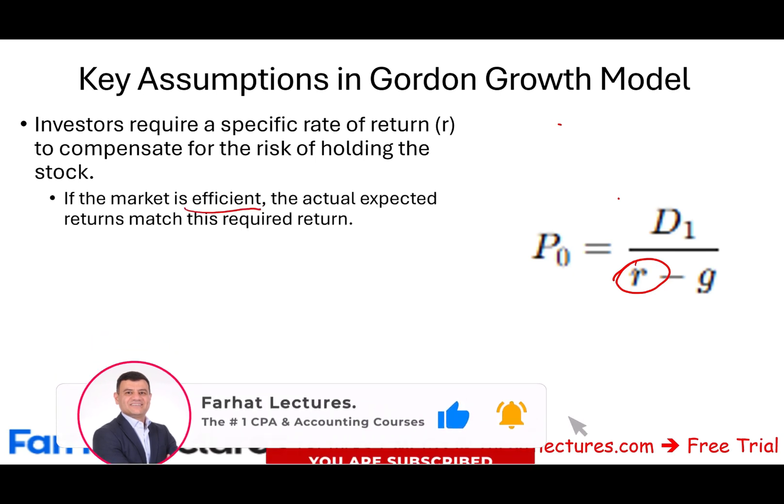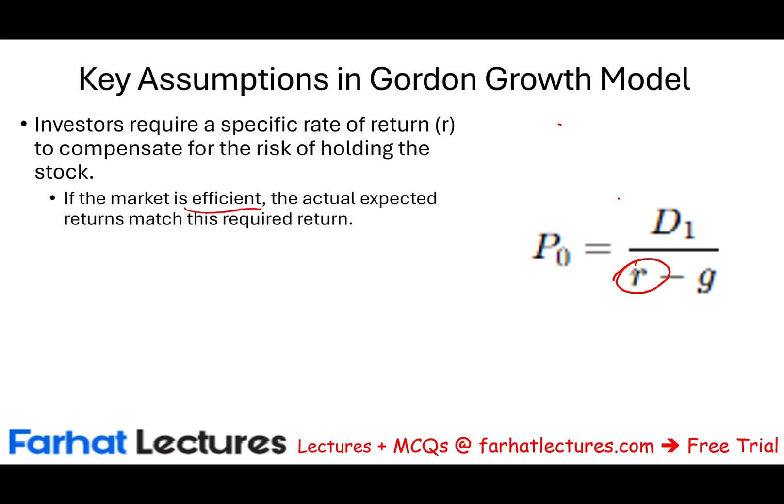If the market is efficient — meaning the market is fair, all information is known — the actual expected return should match the required rate of return. So if the market is efficient and everybody is earning 10% because that's the ongoing market rate, you would earn 10%, assuming you selected the proper investment. R is what the investor requires to earn on their investment — very important, because this whole session is about R.